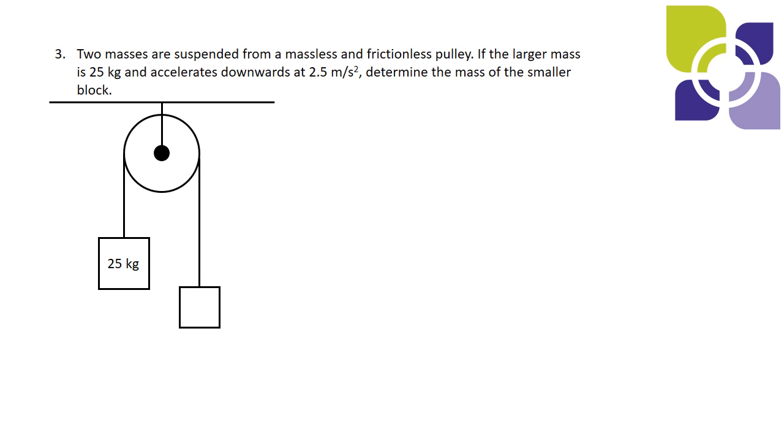In example 3 we have two masses that are suspended from a pulley. The larger mass is 25 kilograms and accelerates downwards at 2.5 meters per second squared. So the acceleration of this 25 kilogram mass is downwards and we were asked to find the mass of the smaller block.